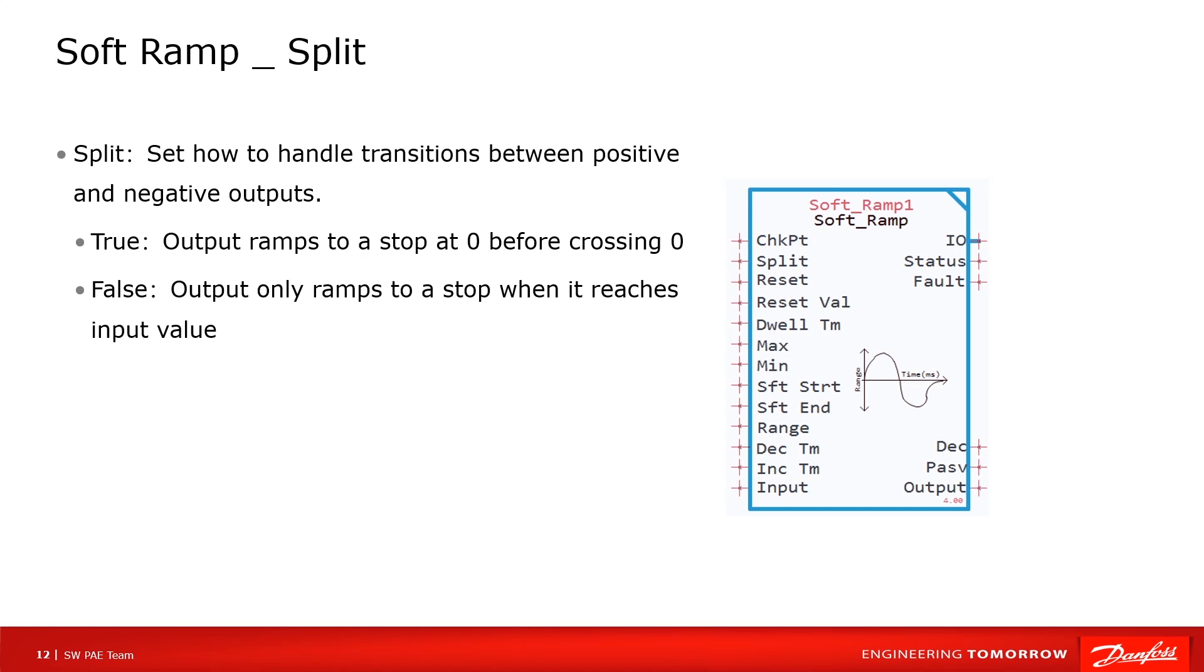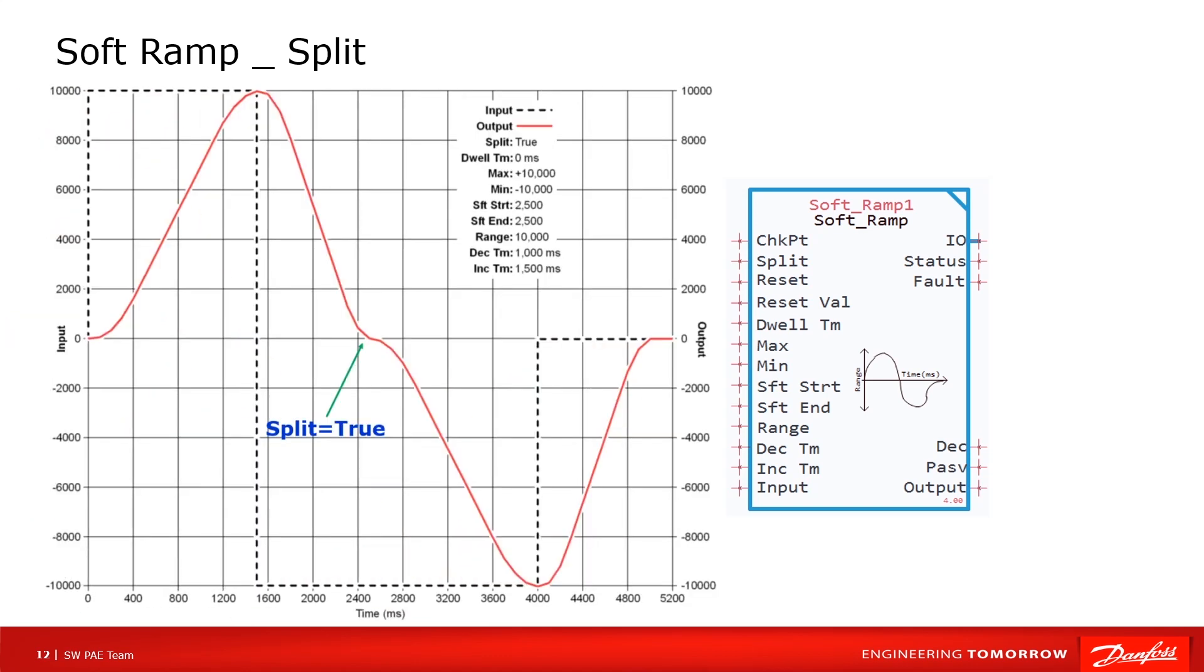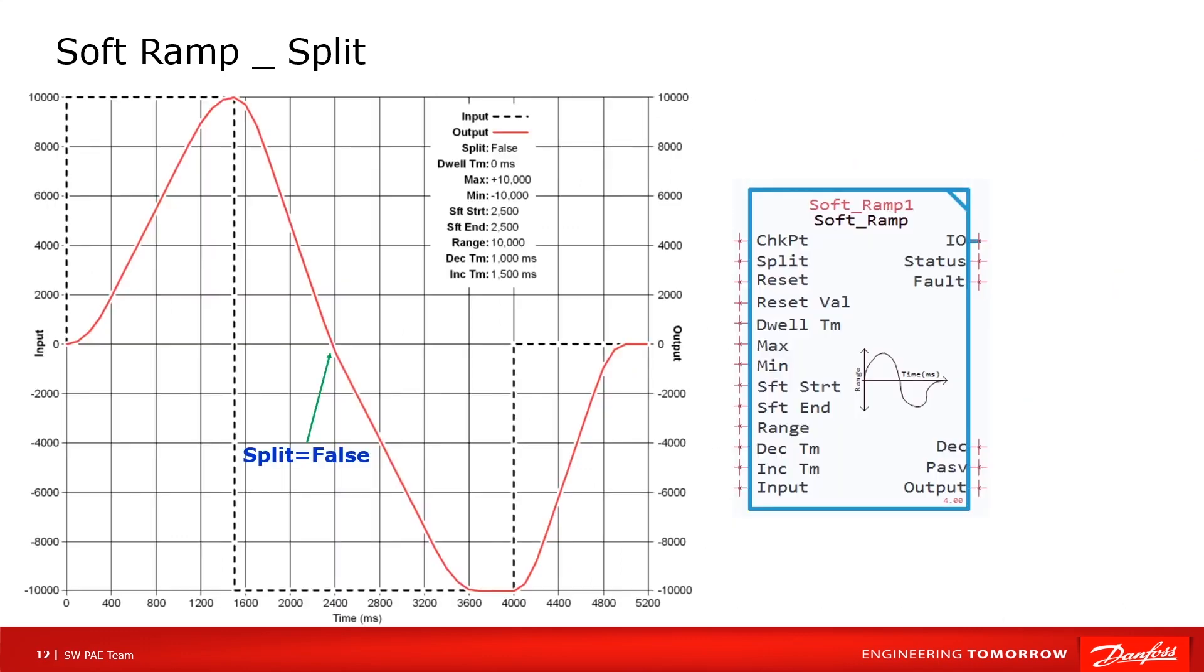Split. This parameter determines how to handle the acceleration when direction changes. Let's look at the trace. If split is true, output soft end to zero, then soft start in another direction. If the split is false, there will not be soft end and soft start.